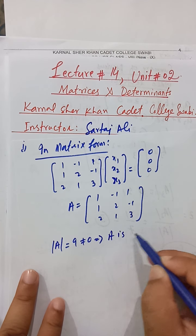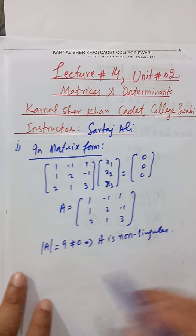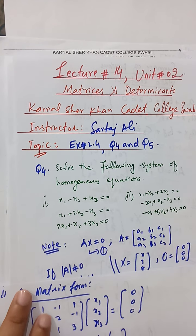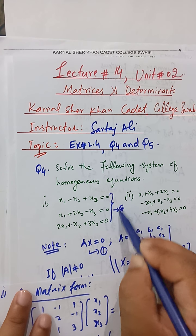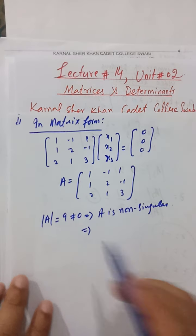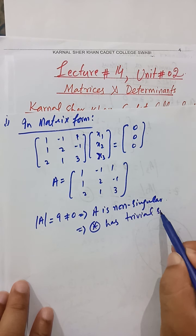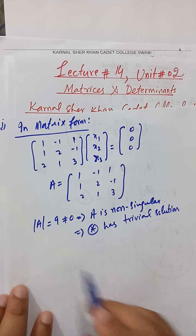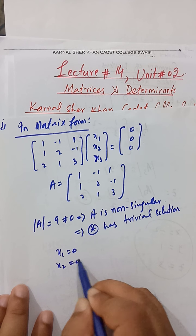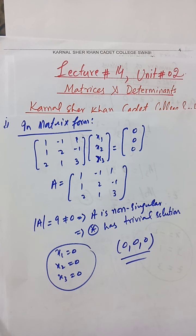The determinant of A equals 9, which is not equal to zero. You can find this using the method of minors and cofactors discussed in previous lectures. This implies A is non-singular, and therefore the given system — let's call it system star — has a trivial solution, meaning all variables equal zero: x1 = 0, x2 = 0, x3 = 0. This ordered triple (0, 0, 0) is the solution; no further calculation is needed.